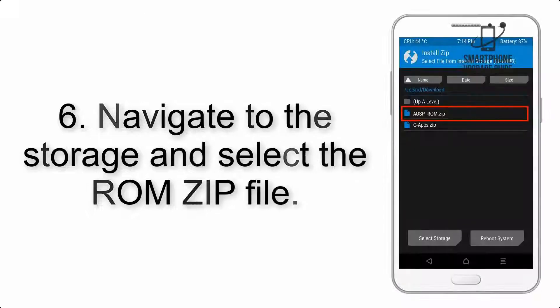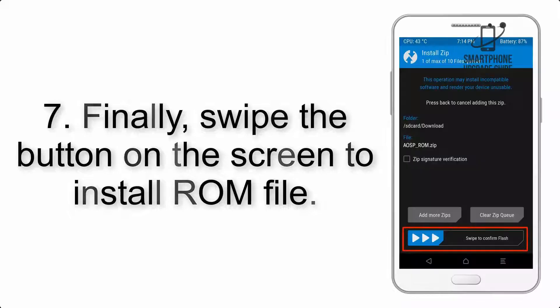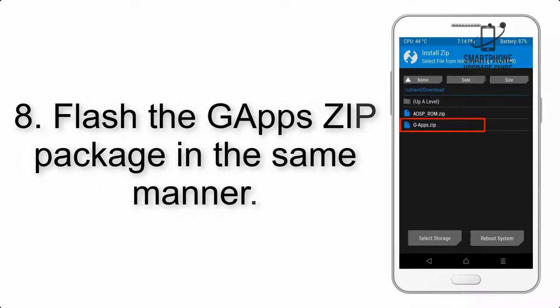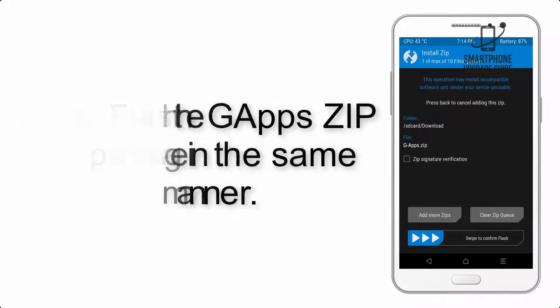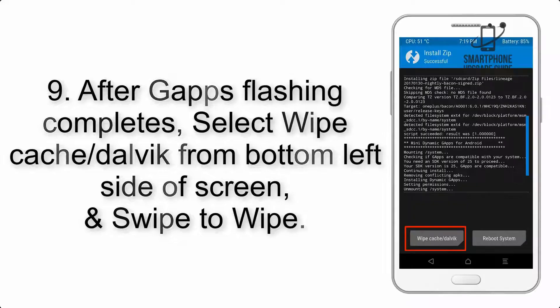Step 5: Go back to the recovery main screen and tap on the Install button. Step 6: Navigate to the storage and select the ROM zip file. Step 7: Finally, swipe the button on the screen to install the ROM file.